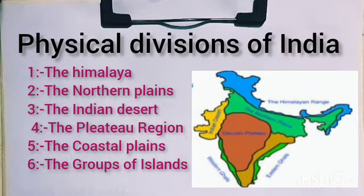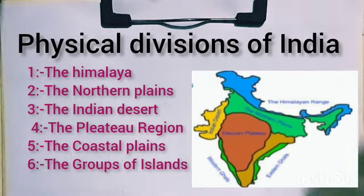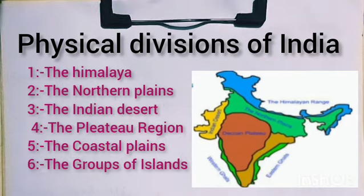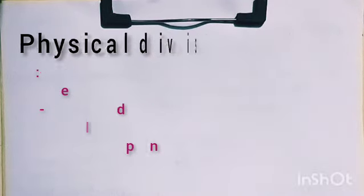Physical features of India: number one is the Himalayan region, number two is the northern plains, number three is the Indian desert, number four is the plateau region, number five is the coastal plains, and number six is the group of islands.